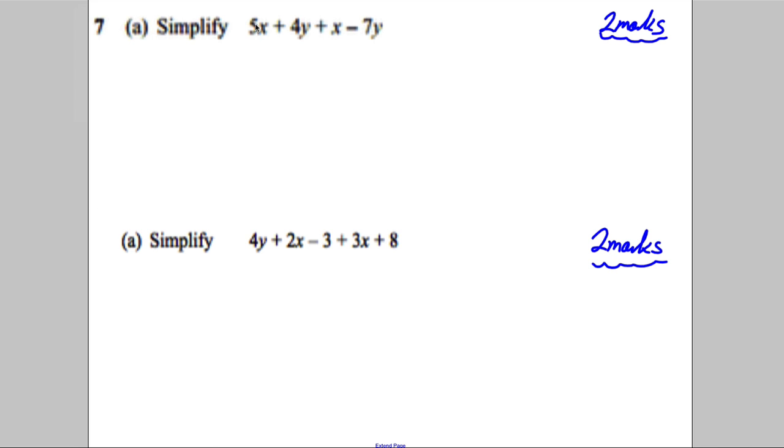Going through this, 5X add an X. And we've got a positive 4Y take away 7Y. 5X add an X is 6X. 4Y take away 7Y is negative 3Y. One mark for that term, one mark for that term.